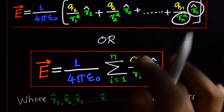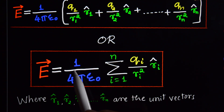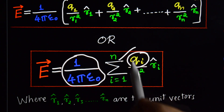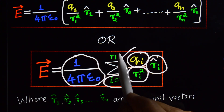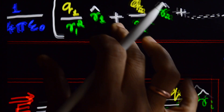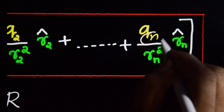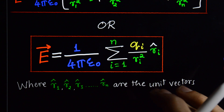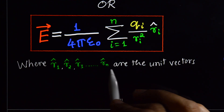The same equation can be expressed as: the electric field E due to n point charges at point P equals (1/4πε₀) Σ (qi/ri²) r̂i, where i runs from 1 to n. In this expression, r̂1, r̂2, r̂3 up to r̂n are unit vectors. This expression is sufficient for a 3-mark answer.